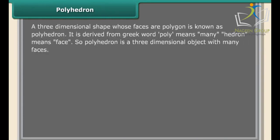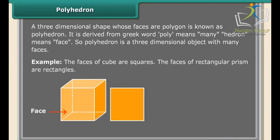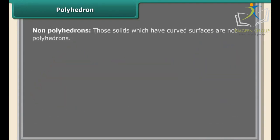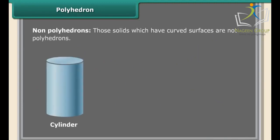A polyhedron is a three-dimensional shape whose faces are polygons. It is derived from the Greek word: 'poly' means many, 'hedron' means face. For example, the faces of a cube are squares and the faces of a rectangular prism are rectangles. Examples of polyhedrons include triangular prism, cuboid, and octahedron. Solids with curved surfaces such as cylinder, cone, and sphere are not polyhedrons.